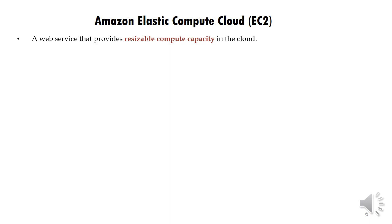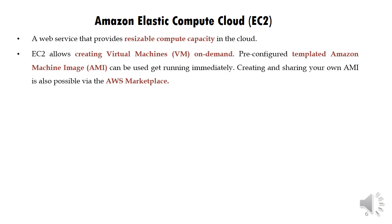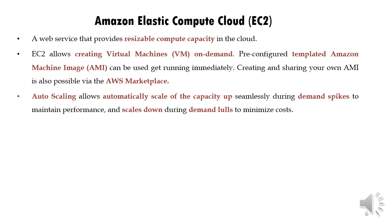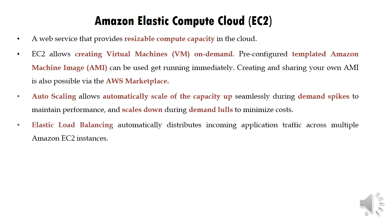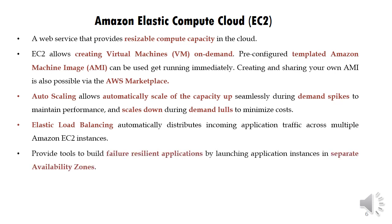Amazon EC2 — Elastic Compute Cloud — provides resizable compute capacity. It allows creating virtual machines on demand. Pre-configured templates called Amazon Machine Images (AMI) can be used to get running immediately. Creating and sharing your own AMI is also possible via AWS Marketplace. Auto-scaling allows automatically scaling capacity up seamlessly during demand spikes to maintain performance, and scaling down during demand lulls to minimize cost.